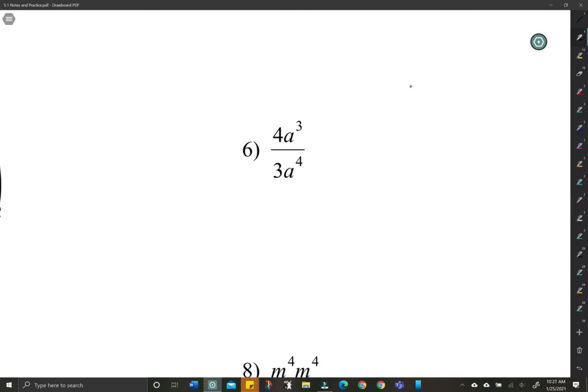So again, 4 thirds, we can't do anything fancy with that. So it's just going to stay 4 divided by 3. Now here, we have a to the third minus 4. So this is going to be 4 thirds a to the negative 1.